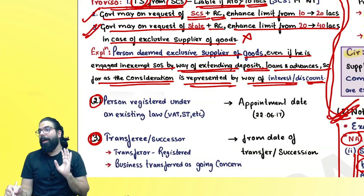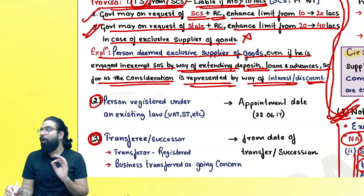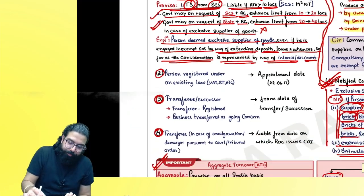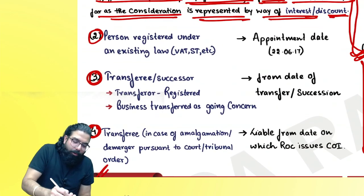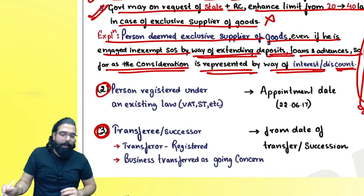A person shall be deemed to be an exclusive supplier of goods even if engaged in exempt supply of service by way of extending deposits, loans, and advances, so far as the consideration is represented by interest or discount. Only if the exempt supply of service is interest or bill discount income will the ₹40 lakh higher limit still be allowed.